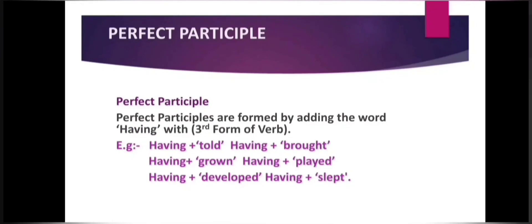Let's repeat the perfect participle once again. Perfect participles are formed by adding the word having with the third form of the verb. For example, having told, having brought, having grown, having played, having developed, and having slept.